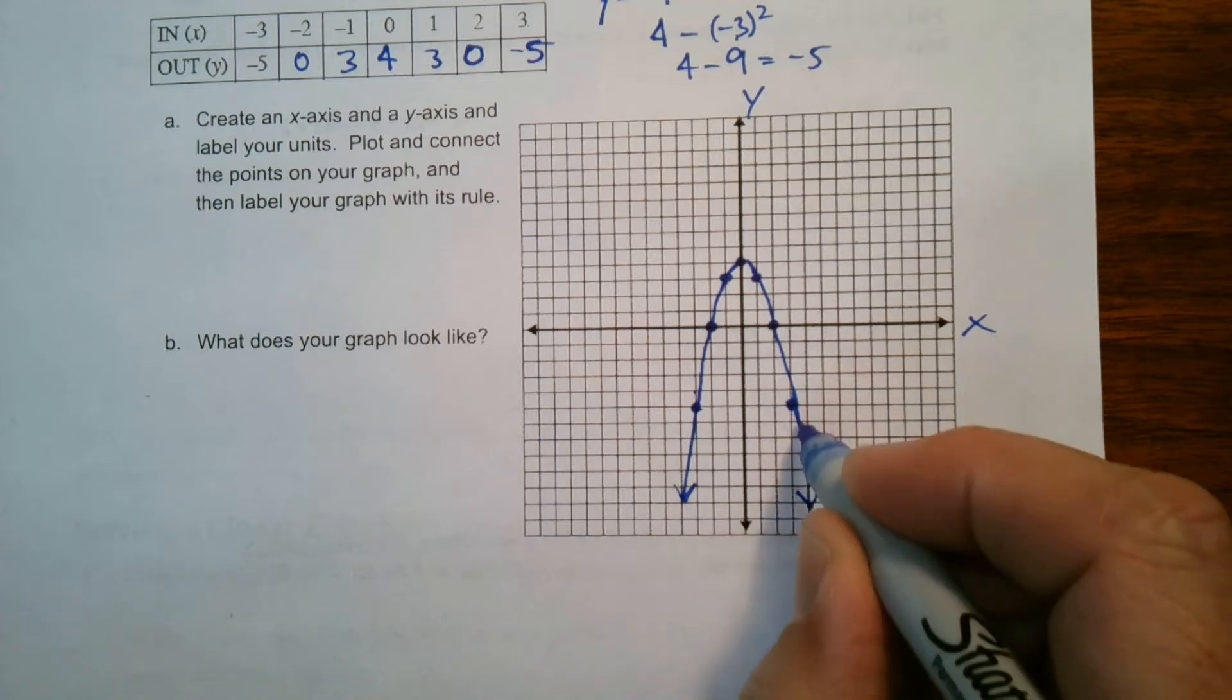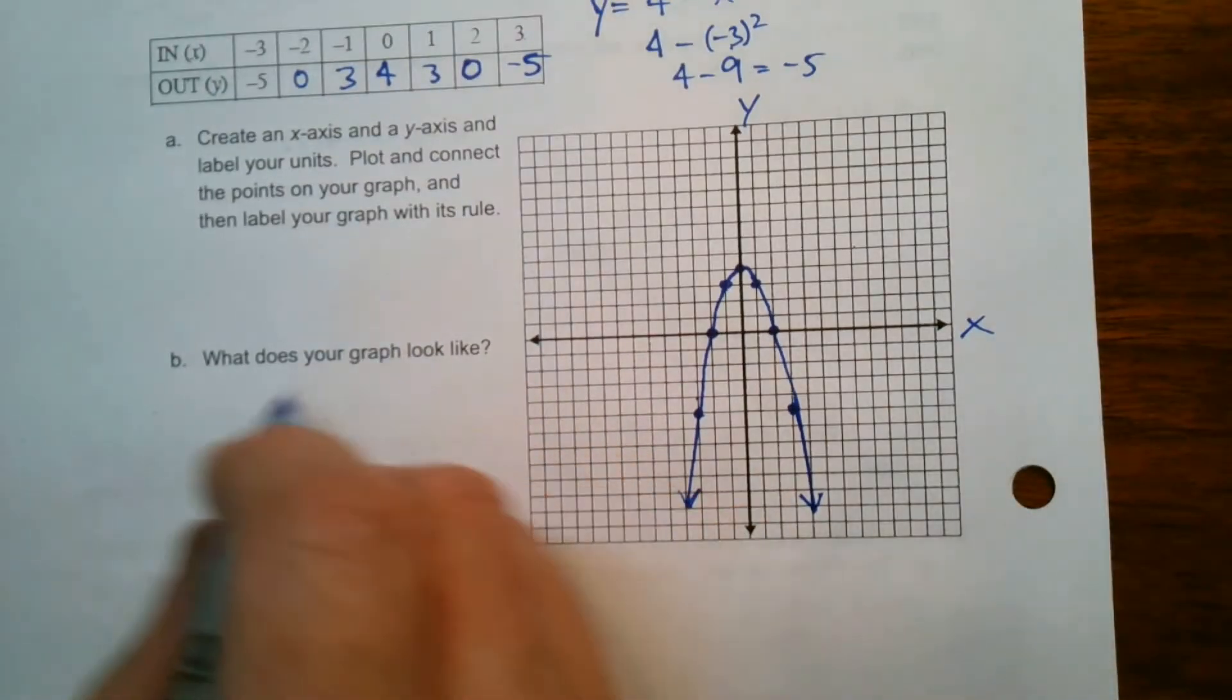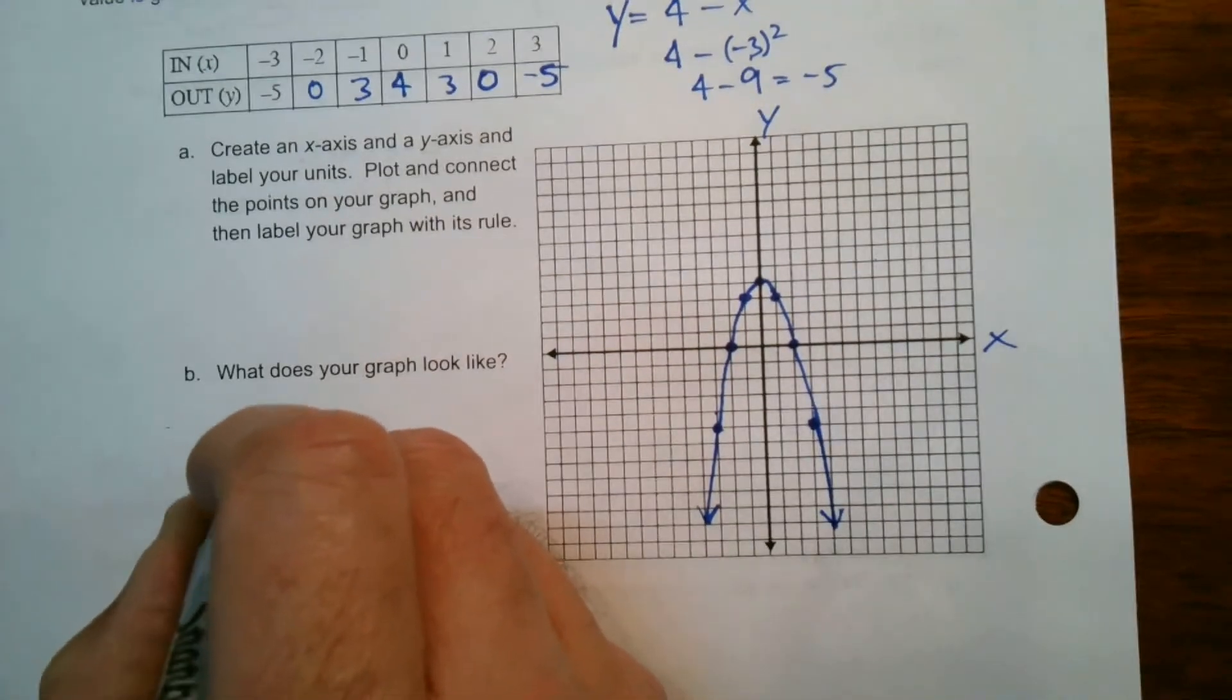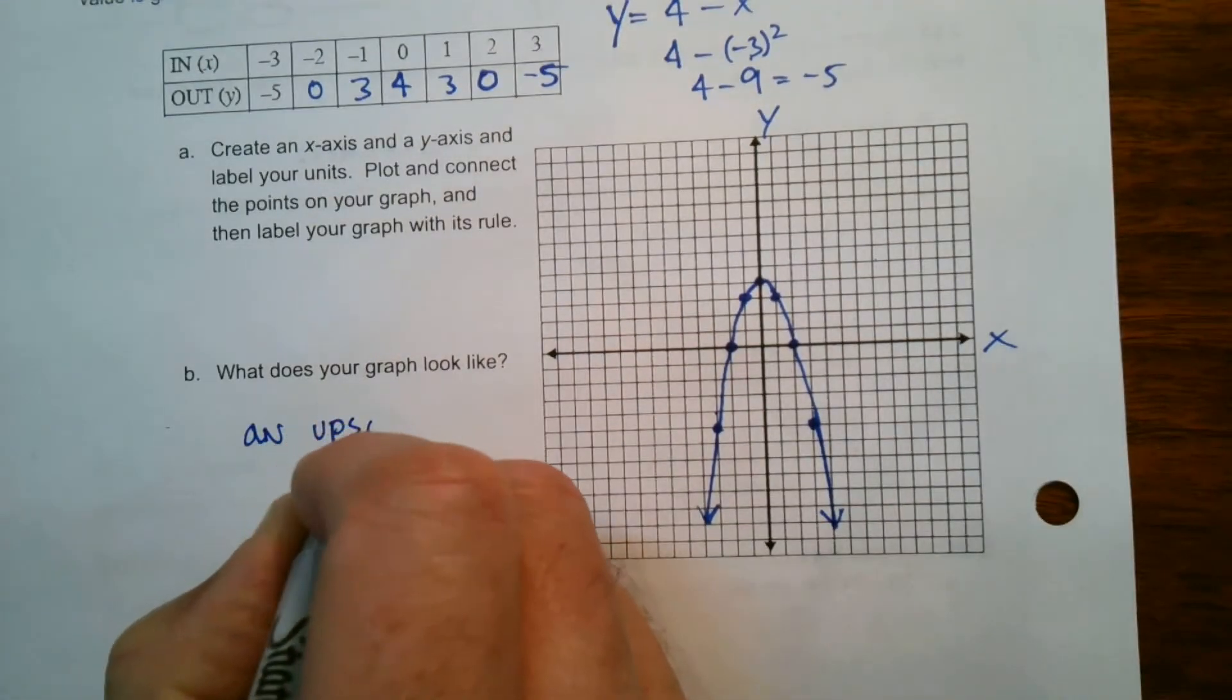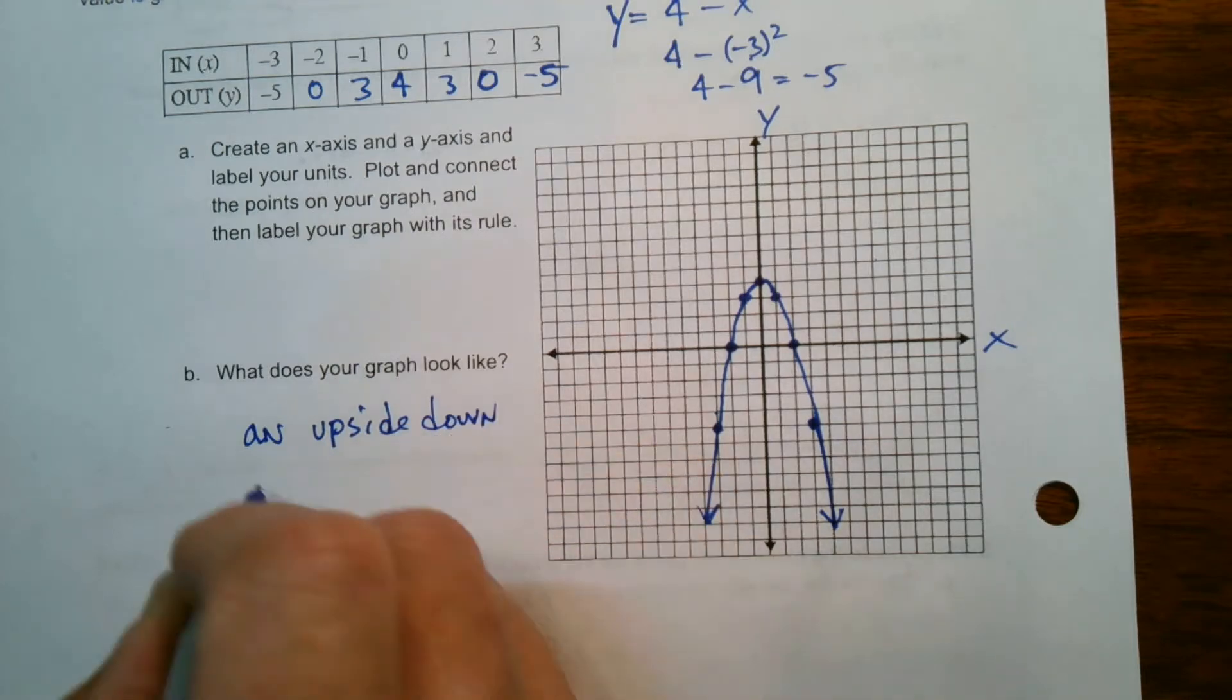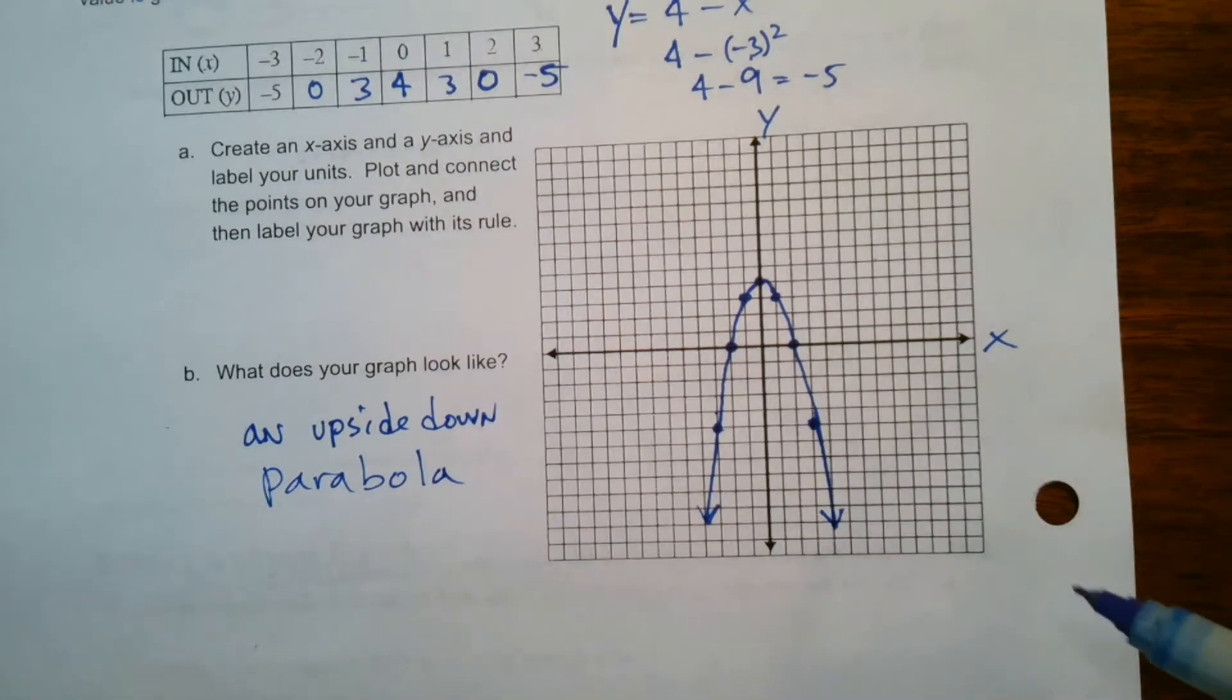So what we have here is an upside down parabola. So make sure you put your arrows because that pattern continues on this. So what does the graph look like? It is an, I would say an upside down parabola.